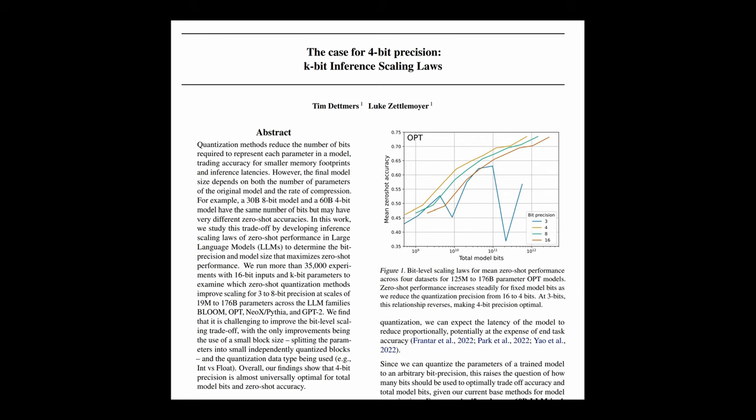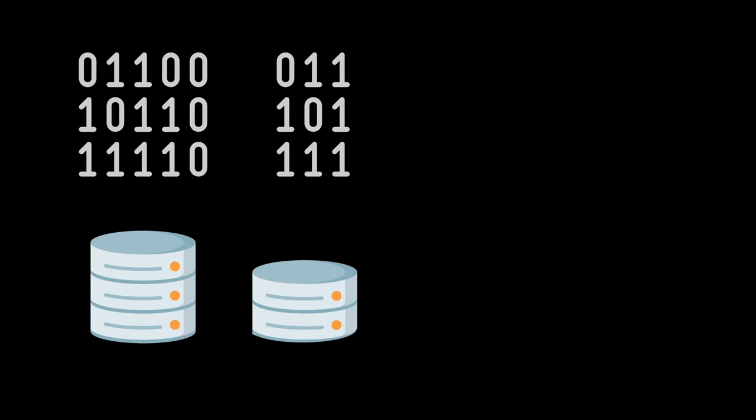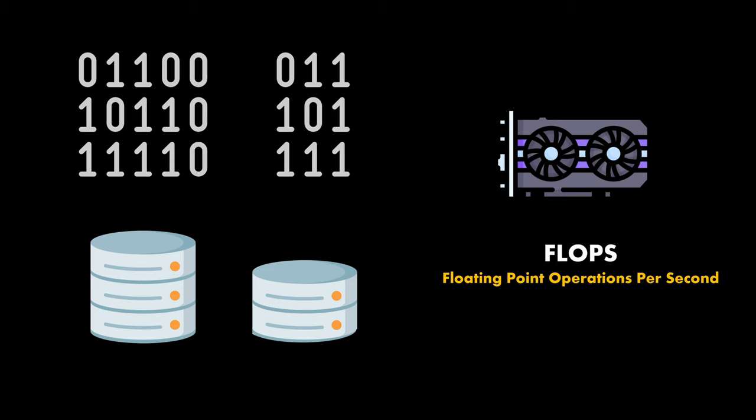There is also a very nice recent paper in which the authors ran 35,000 experiments to compare the optimal combination of model size and k-bit quantization. The conclusion is that 4-bit quantization is almost universally optimal. It's obvious that less digits mean less memory. But it's not only less memory, but smaller precision models are also faster to train on most GPUs, because it takes less time to read the data. Halving the precision typically gives 2x speed improvements in terms of flops during training.